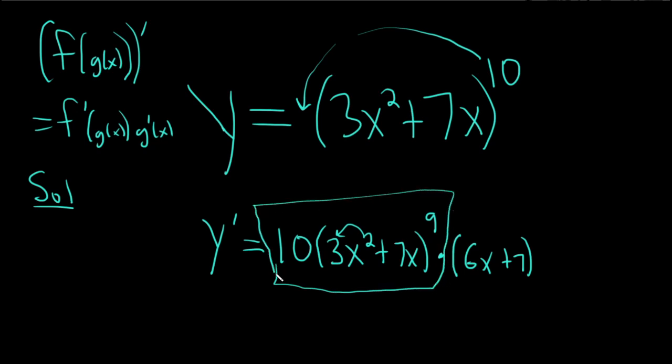So here we've done the derivative of the outside piece, and we've left the inside untouched, and then times the derivative of the inside, your g is this piece here.